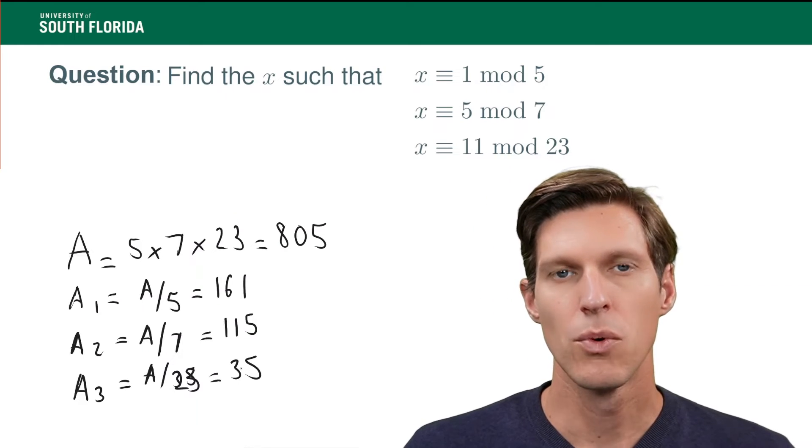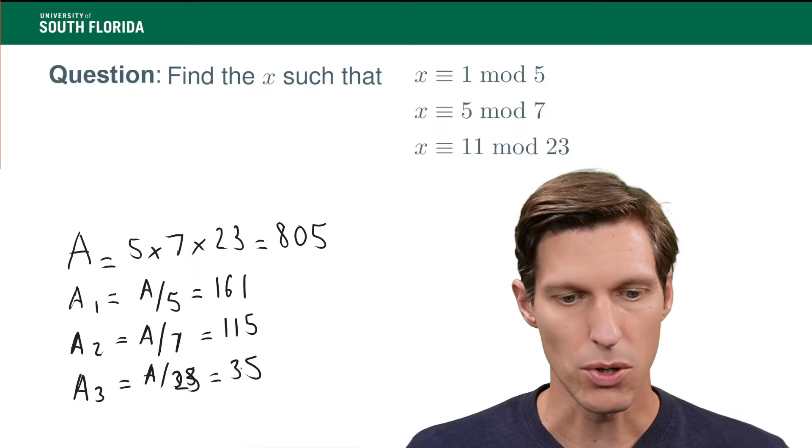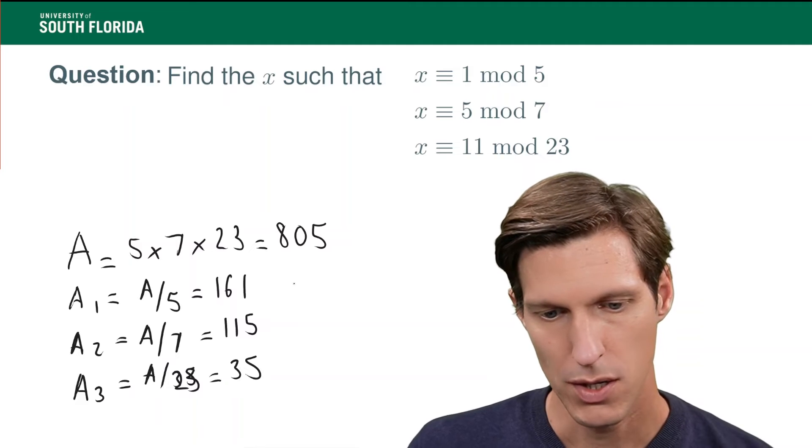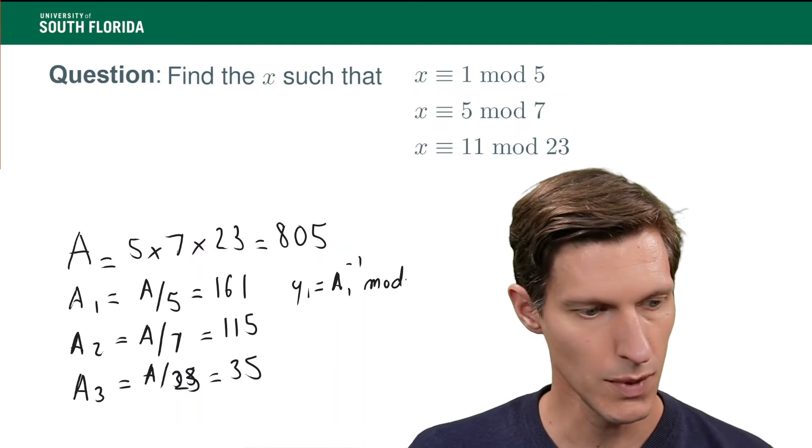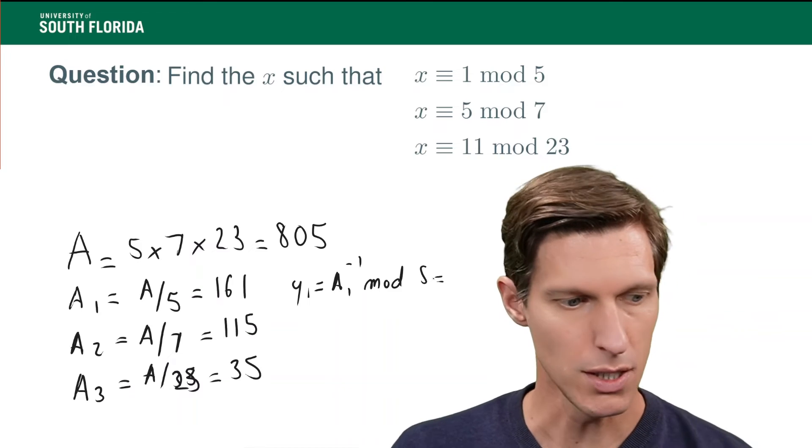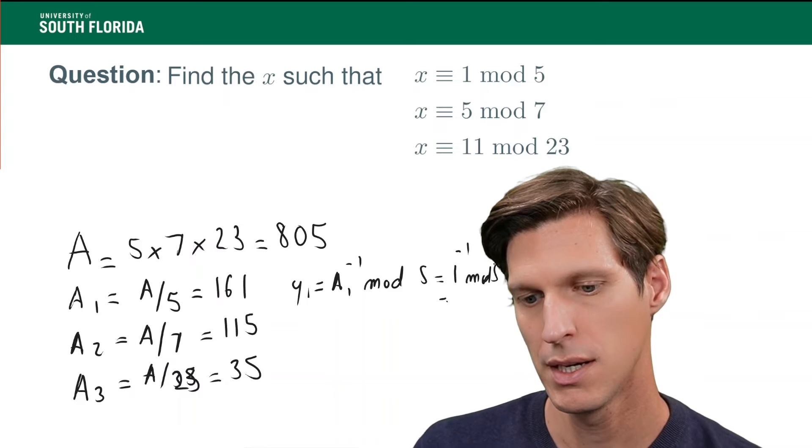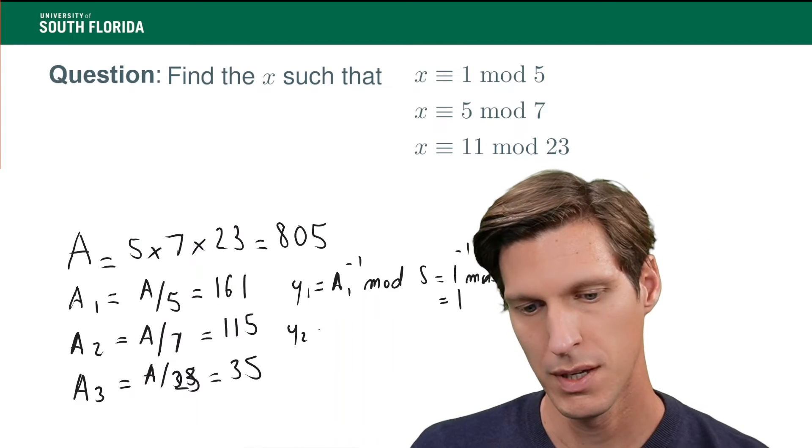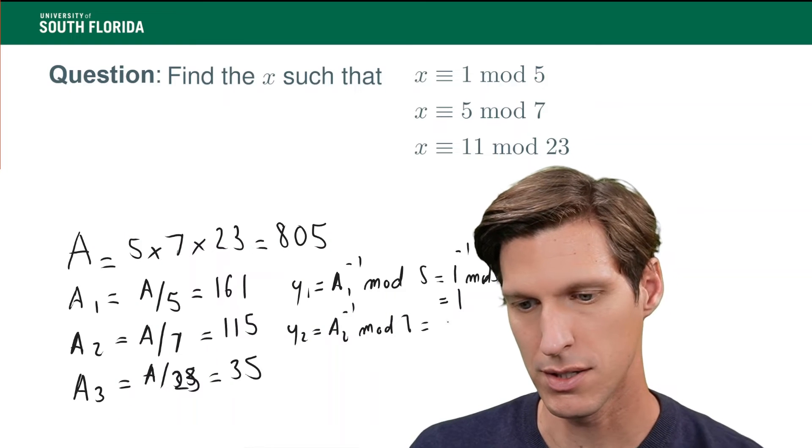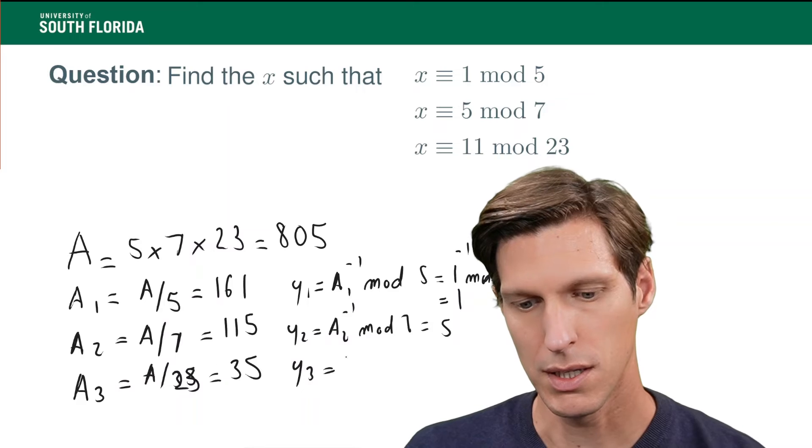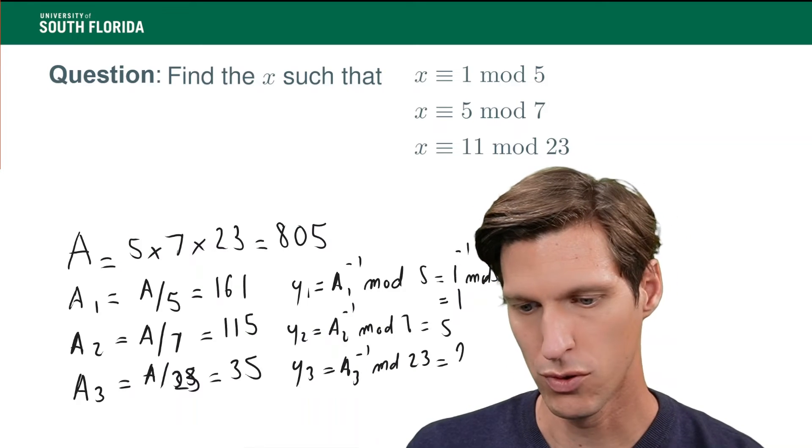Now, following this, we will calculate the values yi's for i equals 1 to 3, which are the inverses of the ai's modulo 5, 7, and 23. So, y1 is equal to a1 inverse mod 5, and that is equal to 1 inverse mod 5. I'm running out of space. That is 1. y2 equals a2 inverse mod 7, and that is 5, and then y3 equals a3 inverse mod 23, and that is equal to 2.